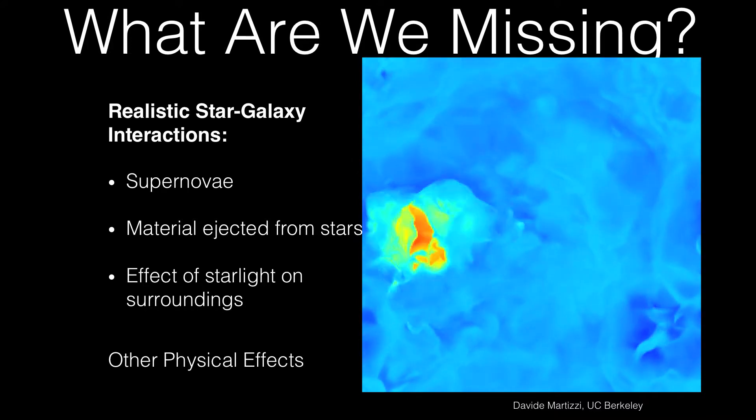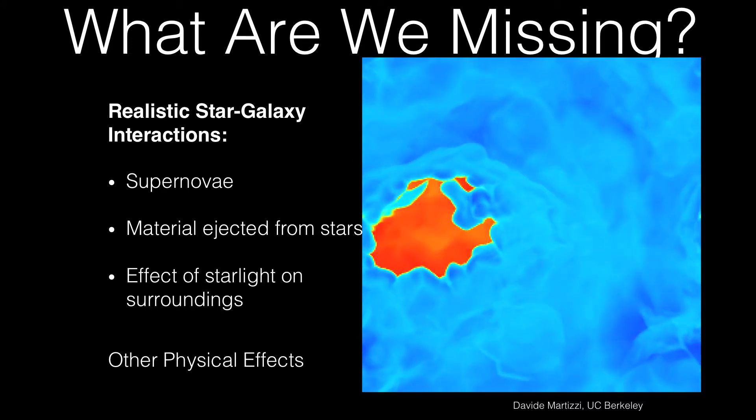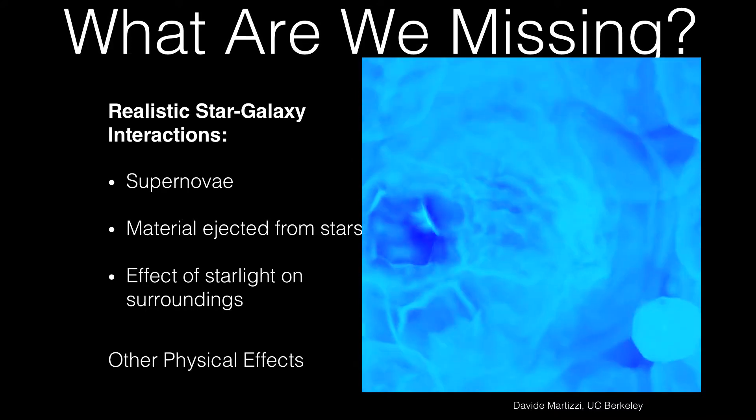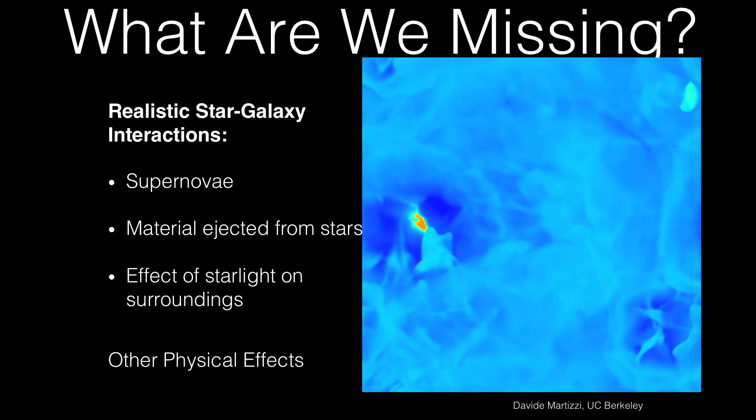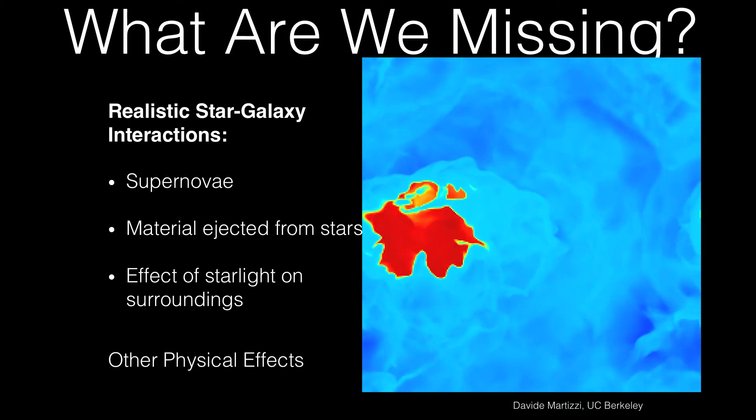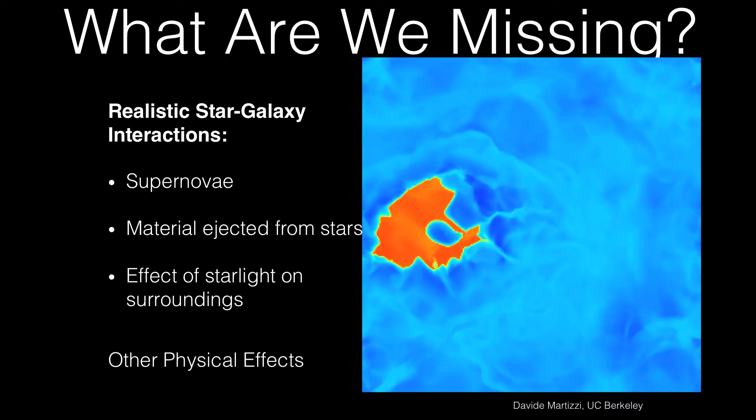So this is a supernova explosion. It happens when supernovae go off, which happens at the end of a star's lifetime, when they grow old and die. And these massive explosions can affect entire galaxies. You have to be very careful about how you implement it. If you're not careful enough, you won't get a realistic galaxy. So the collaboration I'm part of carefully implemented supernova feedback, as well as a few other details about how stars interact with galaxies.